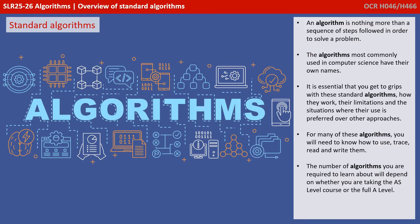An algorithm is nothing more than a sequence of steps followed in order to solve a problem. The algorithms most commonly used in computer science have their own names. It's essential you get to grips with these standard algorithms, how they work, their limitations, and the situations where their use is preferred over other approaches.